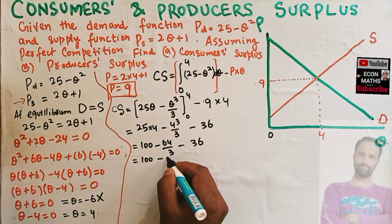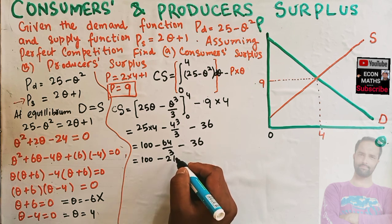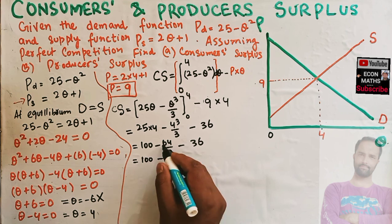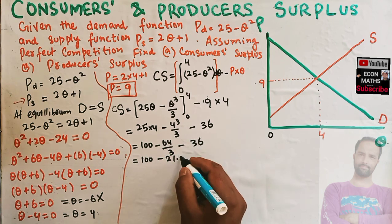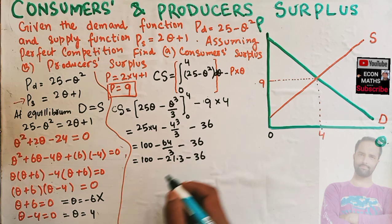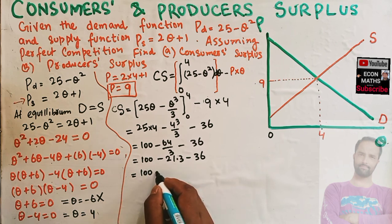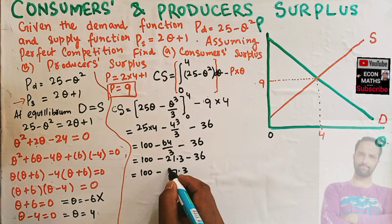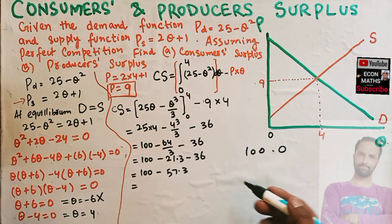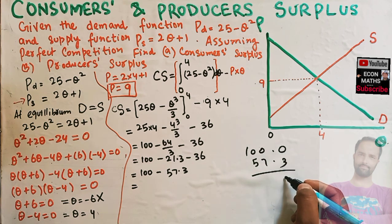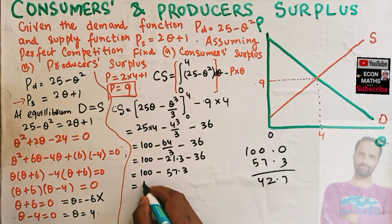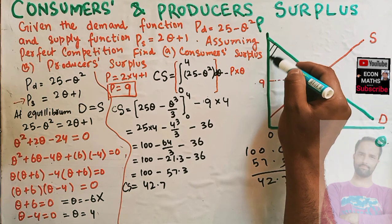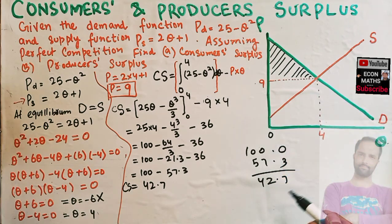Computing: 64/3 is approximately 21.3, and 36 plus 21.3 = 57.3. So consumer surplus = 100 minus 57.3 = 42.7. The area of that triangle representing consumer surplus is 42.7.